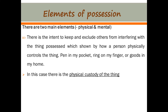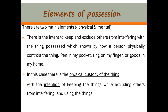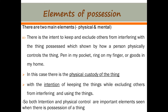In this case there is the physical custody of the thing — I have the pen, I have the ring, I have the goods in my home — with the intention of keeping the things whilst excluding others from interfering and using those things. So both intention and physical control are important elements seen when there is possession of a thing. When I possess a pen, a ring, or goods in my home, I have the intention of keeping those things and excluding others from keeping or using them.